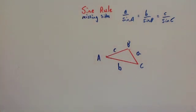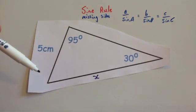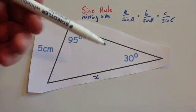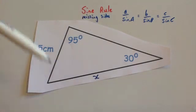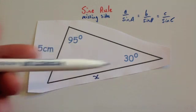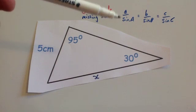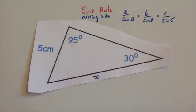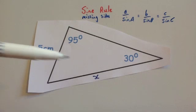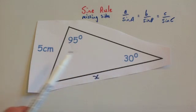Let's do an example. Here we've got a triangle with a side of length 5cm, an angle of 95 degrees, and another angle of 30 degrees. We've been asked to find the side x. We're going to use the sine rule — the reason is that we've got a side and the angle directly opposite it: the 5cm side and the 30 degree angle opposite it.